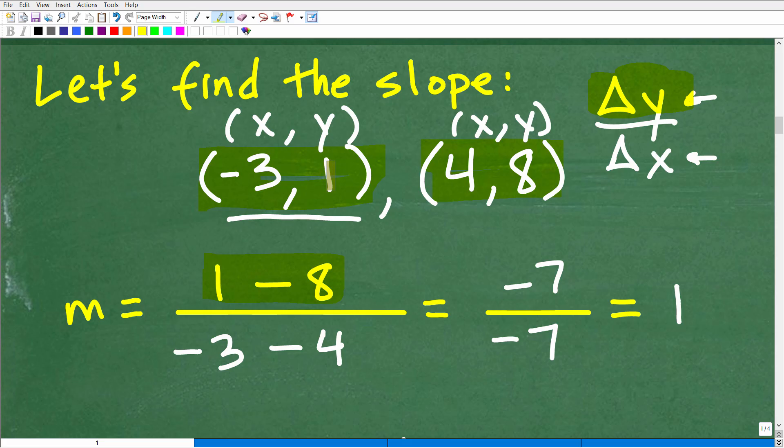So what we need to do is subtract the y's. That's the change in the y's. So do we go 1 minus 8 or 8 minus 1? It doesn't make a difference, okay? But I'm going to suggest, if you're going to go 1 minus 8, just underline the point you're going to start with, because this has a huge impact on your final answer. So 1 minus 8 is going to be what? 1 plus negative 8 or negative 7.